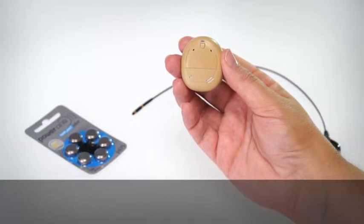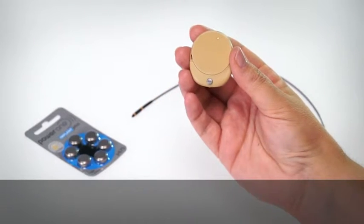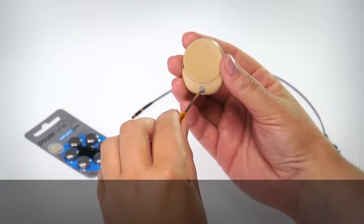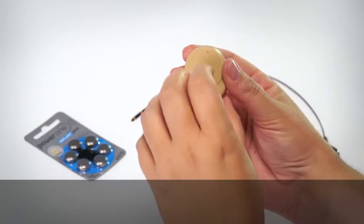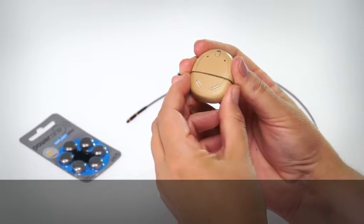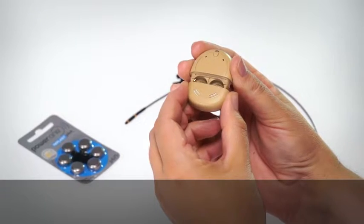If the battery cover is locked, turn the locking screw anti-clockwise to unlock it. Remove the battery cover. Use your fingers on the sides to pull off the cover.